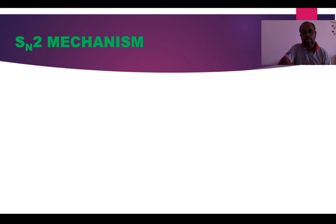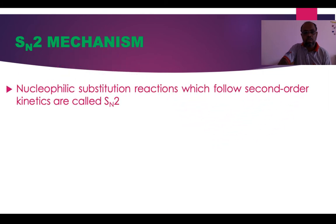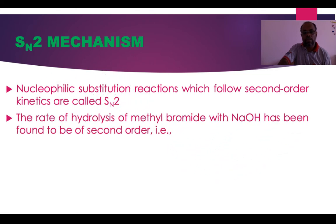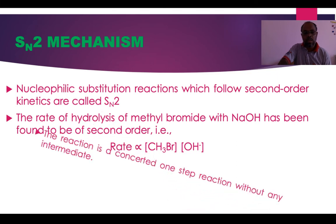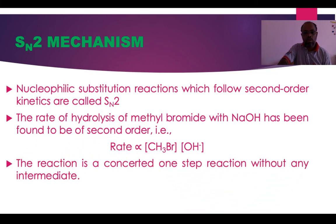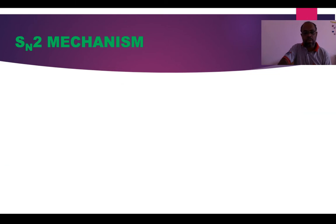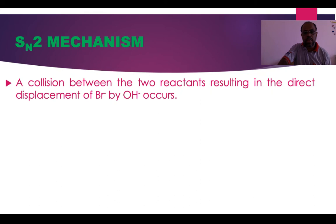Let us discuss the SN2 mechanism. This is a second-order kinetics, bimolecular reaction. Taking the example of hydrolysis of methyl bromide with OH⁻, the rate of reaction depends on both the alkyl halide and OH⁻. It follows a single step and has no intermediates.